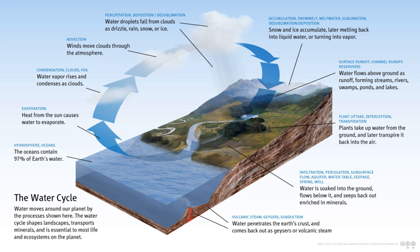Subsurface flow: the flow of water underground, in the vadose zone and aquifers. Subsurface water may return to the surface, e.g. as a spring or by being pumped, or eventually seep into the oceans. Water returns to the land surface at lower elevation than where it infiltrated, under the force of gravity or gravity-induced pressures. Groundwater tends to move slowly and is replenished slowly, so it can remain in aquifers for thousands of years.